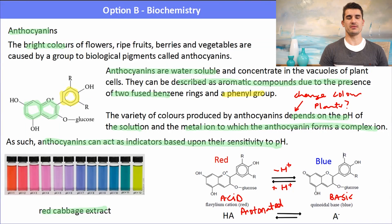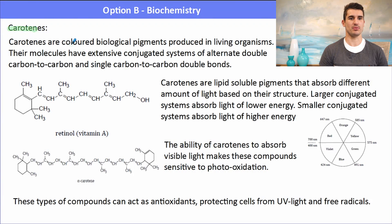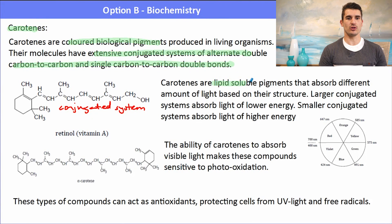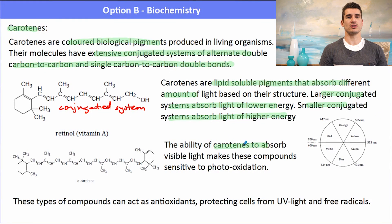Carotenes are coloured biological pigments produced in living organisms. Their molecules have extensive alternating single and double carbon-to-carbon bonds, which means they are a conjugated system. For instance, retinol (vitamin A) is a conjugated system. The larger the conjugated system, the lower the energy of light absorbed; the smaller the system, the higher the energy absorbed. The ability of carotenes to absorb visible light makes them sensitive to photo-oxidation, so they are often used as antioxidants.